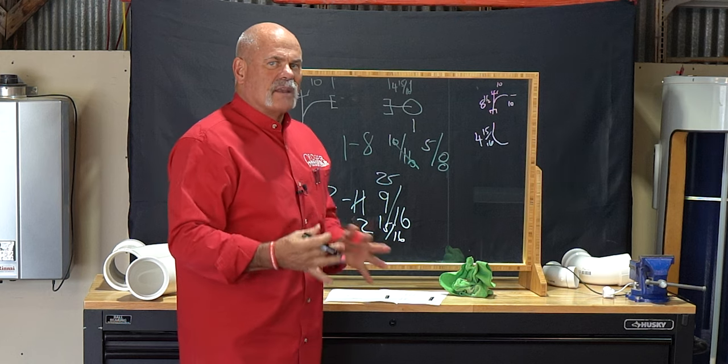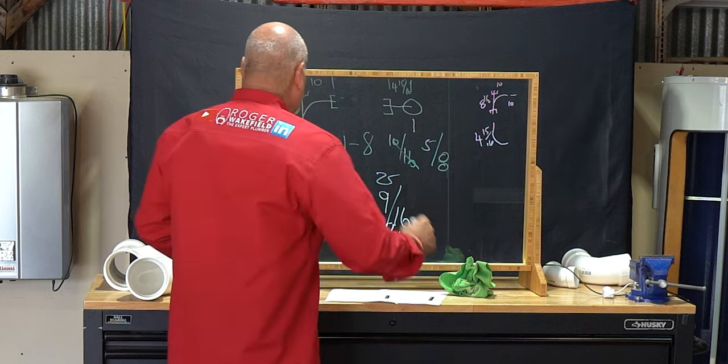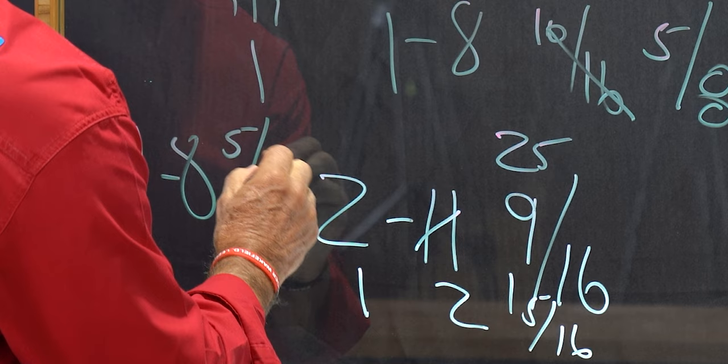But before we do that, we're going to check and double check. We want to make sure that we cut this right. So you're going to take your one foot eight, five eighths.